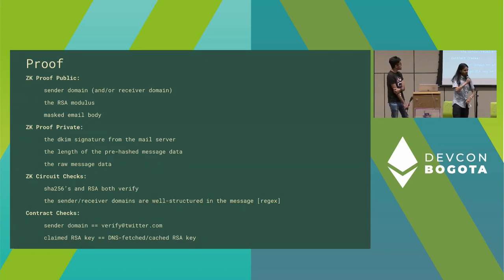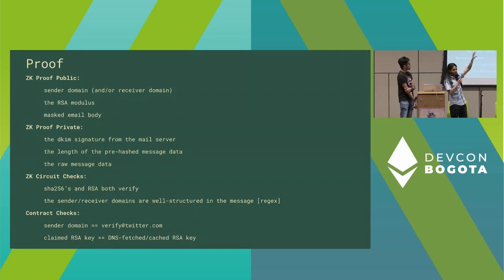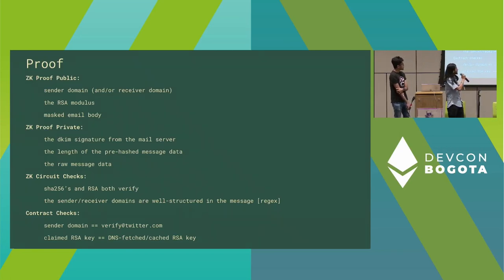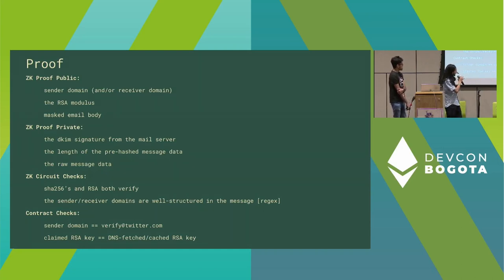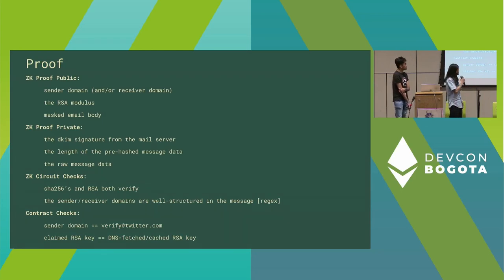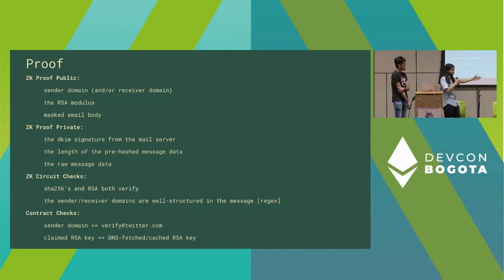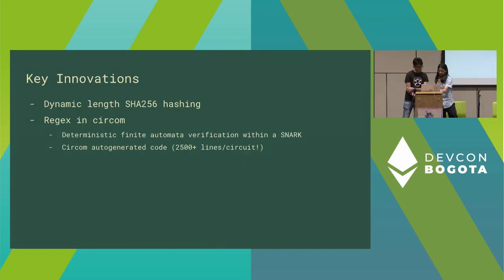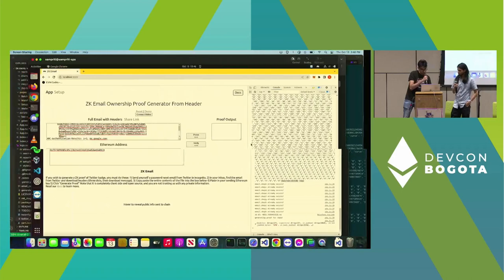In the circuit, we check that the DKIM signature verifies, the SHA hashes verify, the RSA signatures verify, and that all the text is well structured in the message — which requires a bit of regex parsing. In the smart contract, we verify things that are either very expensive to do in a SNARK or must be done on a decentralized layer, such as verifying the sender domain is one that people trust and verifying the claimed RSA key is one that people trust. Let me go check if the demo is done.